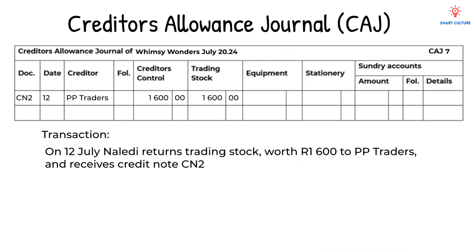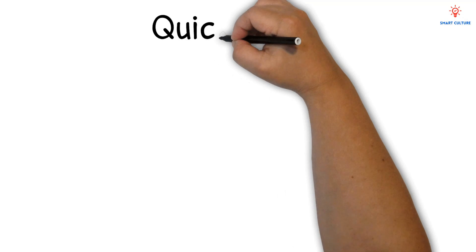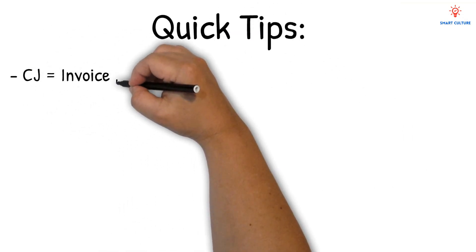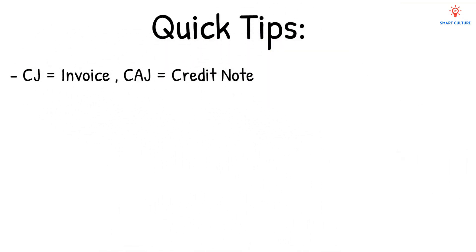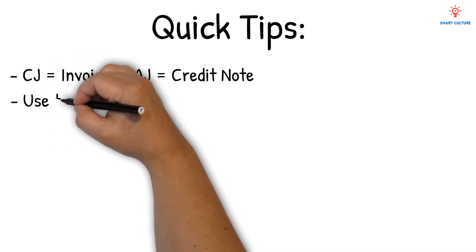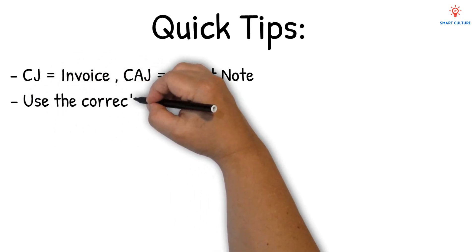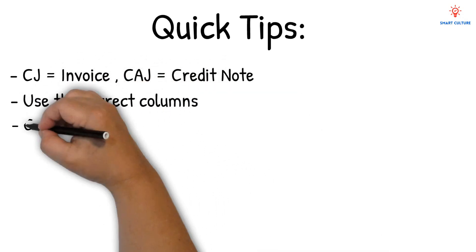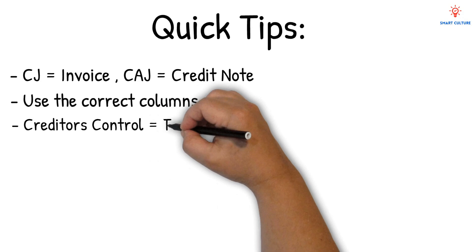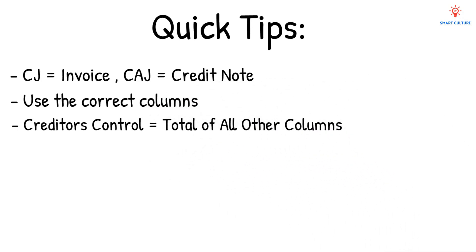Remember the following: always use the correct journal — invoices go in the CJ and credit notes in the CAJ. Always choose the correct column for the item, and ensure Creditor's Control equals the total of the other columns on the same row.